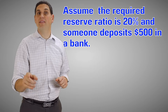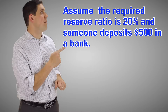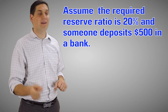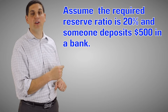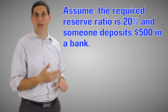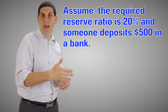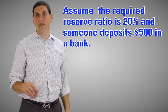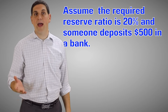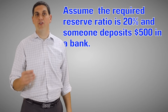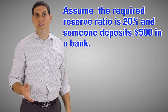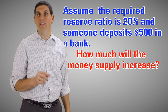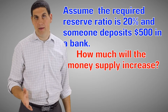Let's assume the reserve requirement is 20% and someone deposits $500 into their bank — from their pocket into the bank, $500. Assuming that banks loan out all of their excess reserves and there are no other leakages, how much would be the increase in the money supply?